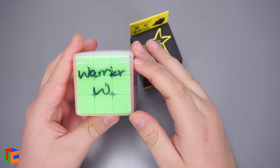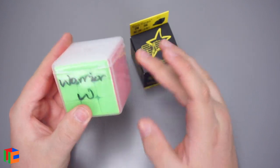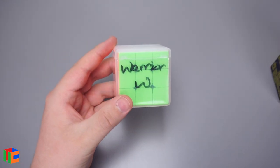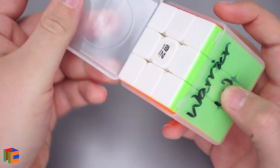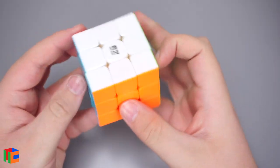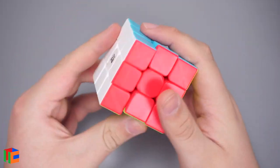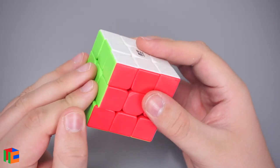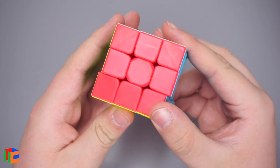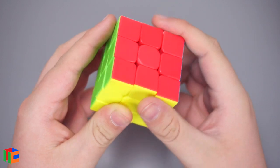I haven't heard anything about a Warrior W 3x3, so I guess we'll go ahead and check this one out first. Let's go ahead and open it up. Obviously this is a stickerless puzzle. The stickerless shades are pretty bright. Actually, the sides feel kind of like they have a matte finish.